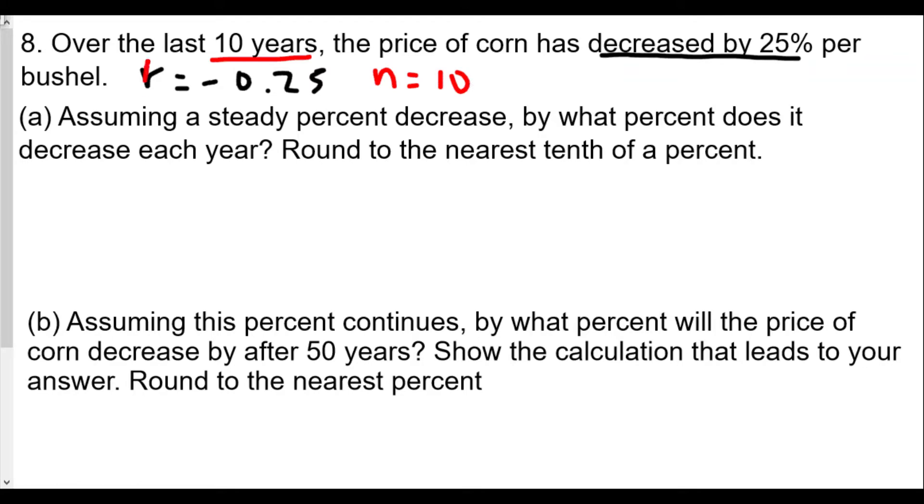Wait, sorry about that - we want to find r, we want to find the annual rate. That's the unknown value, so we almost made a big mistake. We're going to have 1 plus negative 0.25 equals 1 plus r raised to the 10th power.